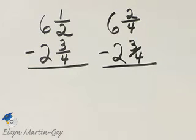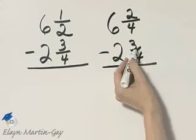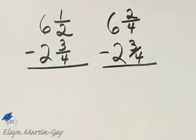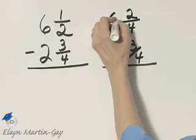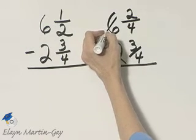Now what is the problem here? The problem is that I can't take three fourths from two fourths, so I will borrow as usual when subtracting.